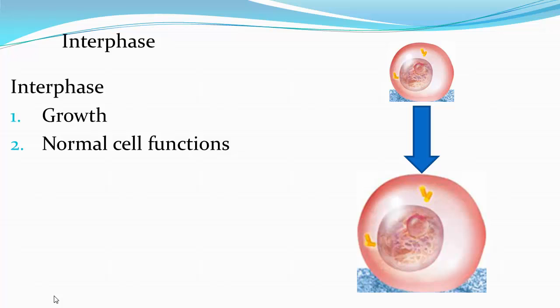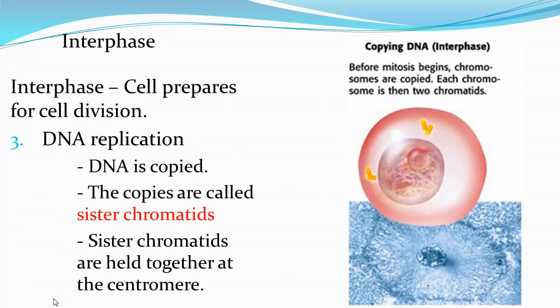During interphase, the cell grows and gets a little bit larger. It performs its normal cell functions and gets ready for mitosis. To get ready for mitosis, the DNA is copied, and the copies are called sister chromatids. Sister chromatids are held together at the centromere. Let's take a look at what your notes should look like for a drawing of the first stage of the cell cycle, which is interphase.